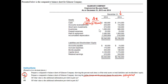Accounts receivable changed by $65,000 — it went up. Taking $65,000 over $155,000, the percentage change is accounts receivable increased 41.94%. Short-term investments changed by $120,000 over the year. Taking $120,000 over $150,000, it increased 80%.